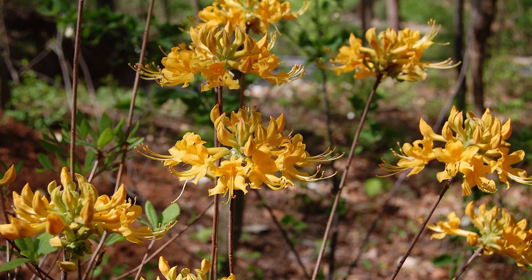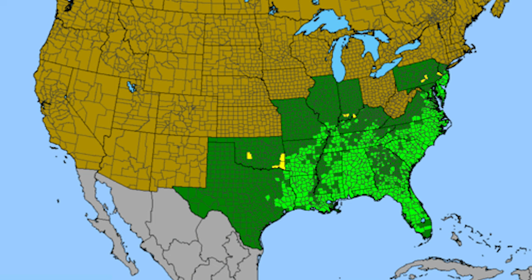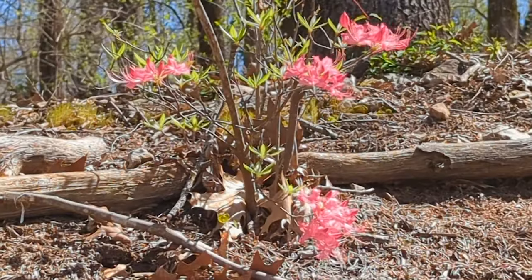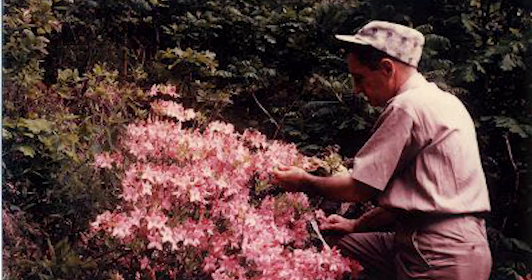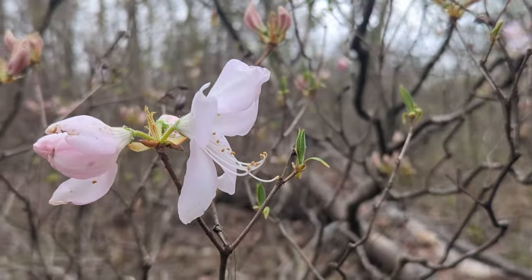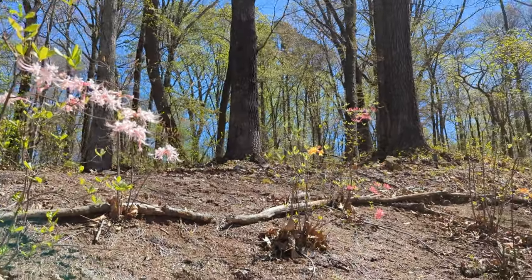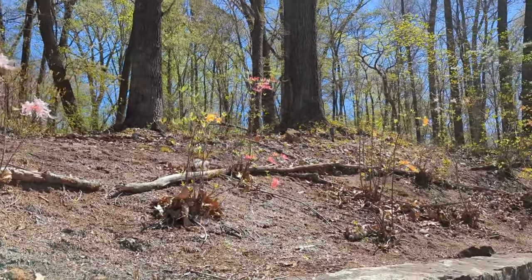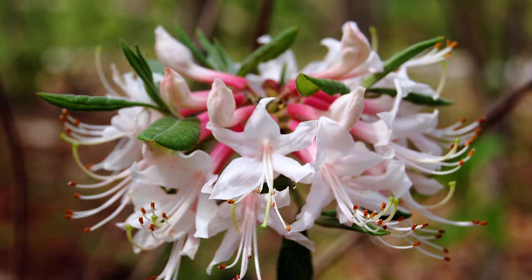Our native azalea is Piedmont azalea. They grow from zone six to nine, generally between six to ten feet tall and wide, and bloom usually in April. They're typically multi-stemmed and make beautiful pinkish-orange flowers. For best flowering they do well in full sun, but they can take shade as well.